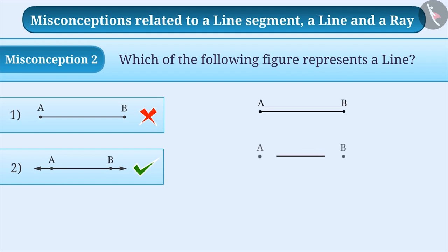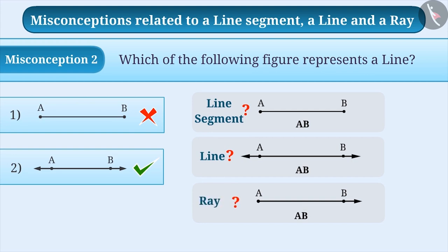Similarly, some students fail to give names in the correct way to a line segment, line or ray. They simply give AB as the name of the given line segment or line or ray. They don't think it is necessary to draw a line segment, line or ray on top of AB and simply ignore it. By giving names in this way, we cannot differentiate between a line segment, a line or ray.